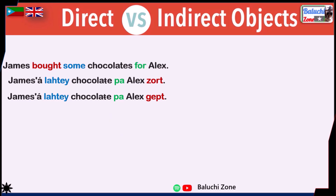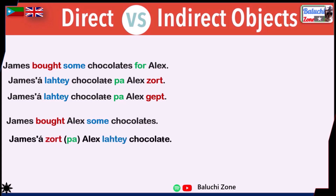Anyway, let's get back to our lesson. The sentence 'James bought Alex some chocolates' can be expressed as: 'James O zort pa Alex lahti chocolate.' You can also say: 'James O gipt pa Alex lahti chocolate.'